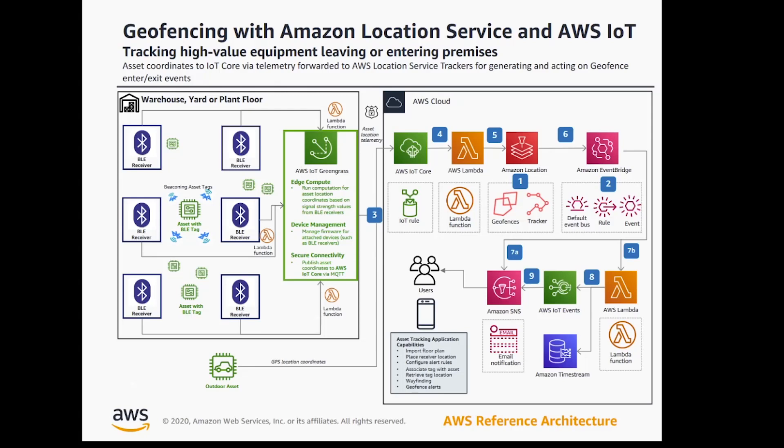What is going on guys, this is another architecture review video and this time we're talking about a geofencing application that leverages Amazon Location Services and IoT to track some high-value goods as they enter and exit a facility.